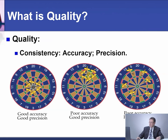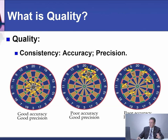In the middle picture, you can see that the arrows are close to each other, so we say we have good precision. However, we have poor accuracy because we did not hit the target. In the third picture, the arrows are close to each other and we hit our target, so we say we have good accuracy and good precision.